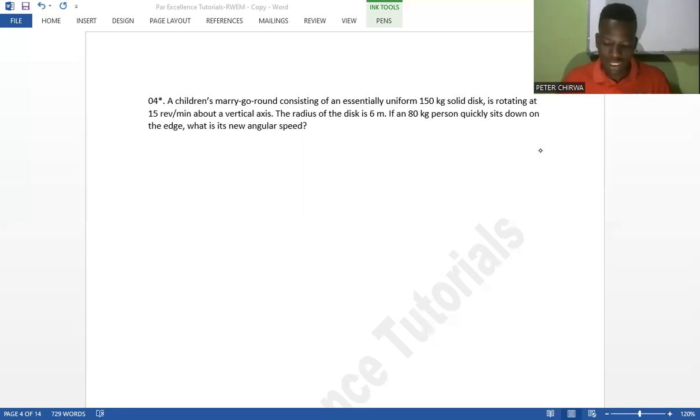Well, so the question goes: a children's merry-go-round consisting of an essentially uniform 150 kilogram solid disc is rotating at 15 revolutions per minute about a vertical axis. The radius of the disc is six meters. If an 80 kilogram person quickly sits down on the edge, what is its new angular speed?